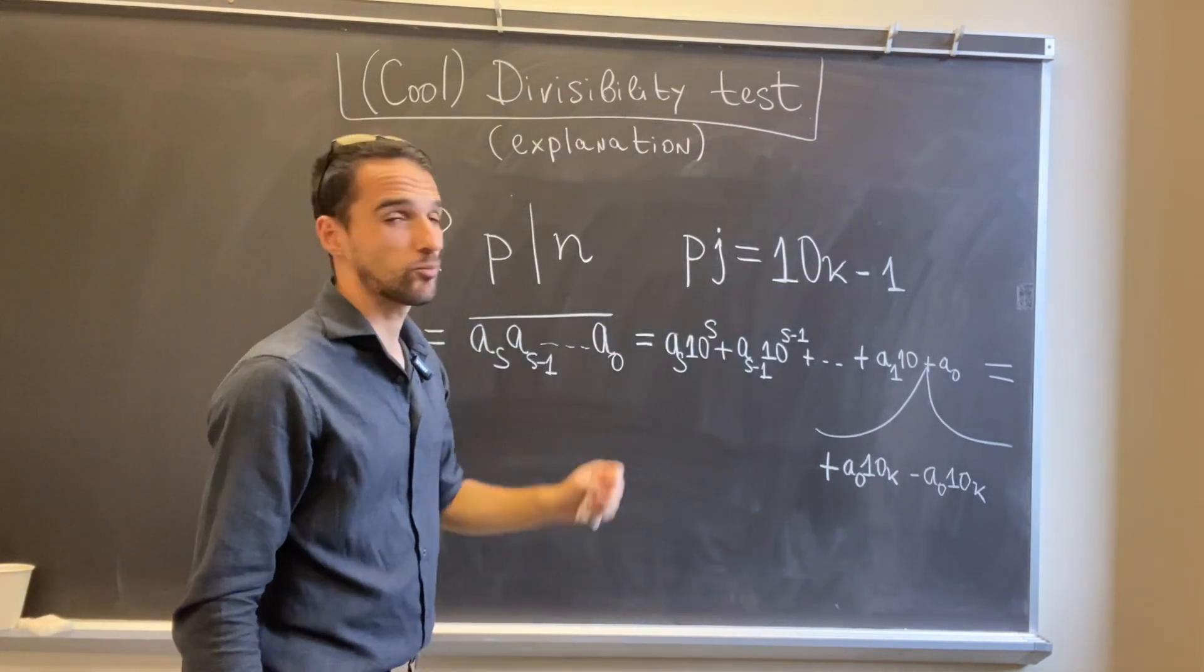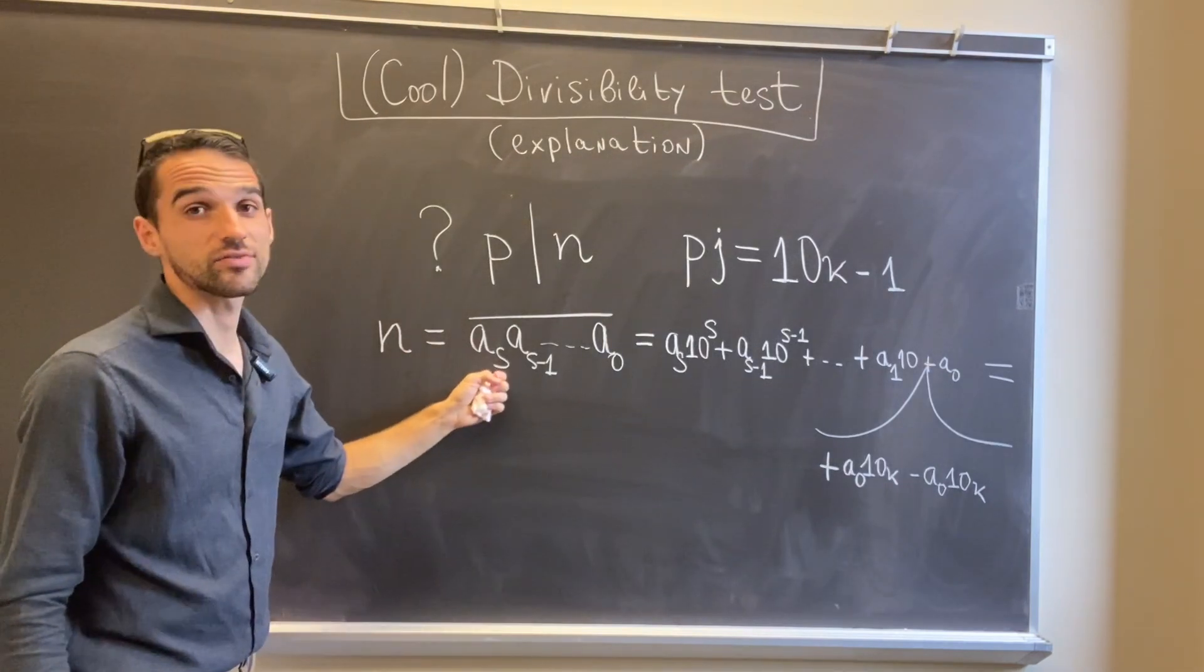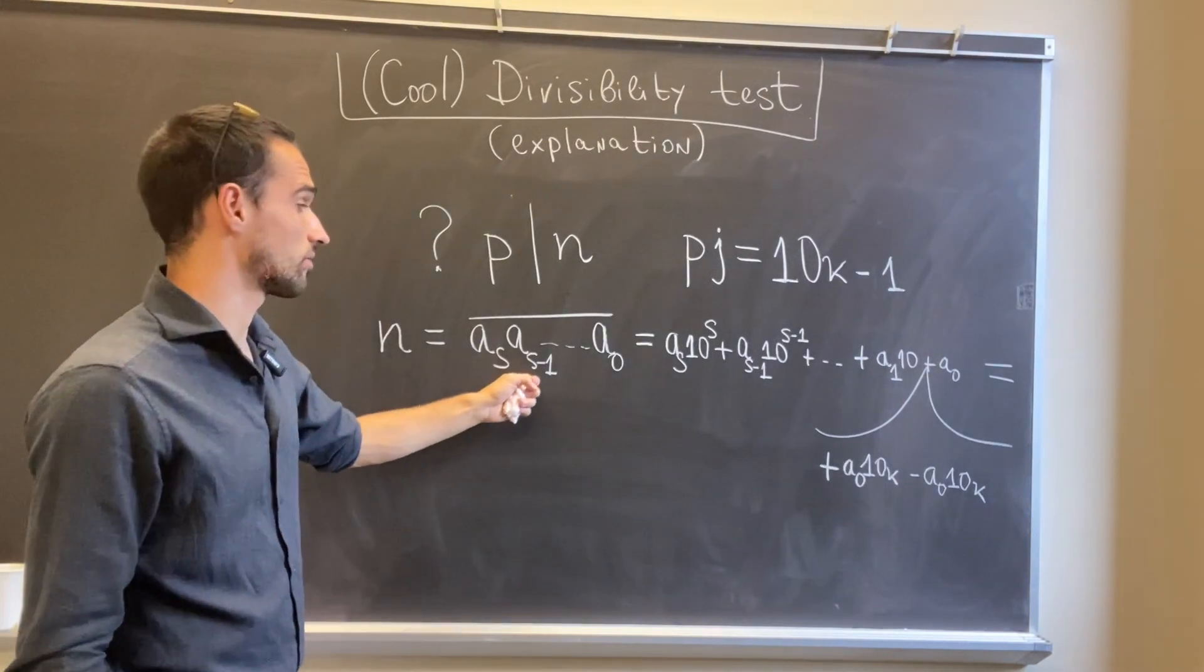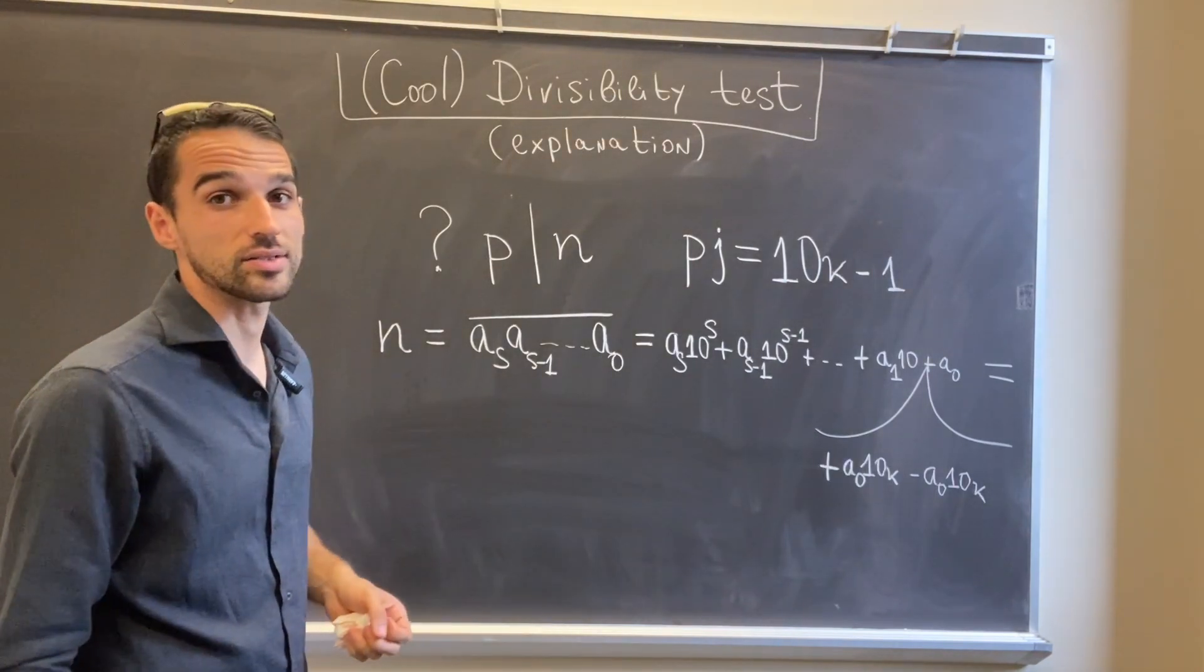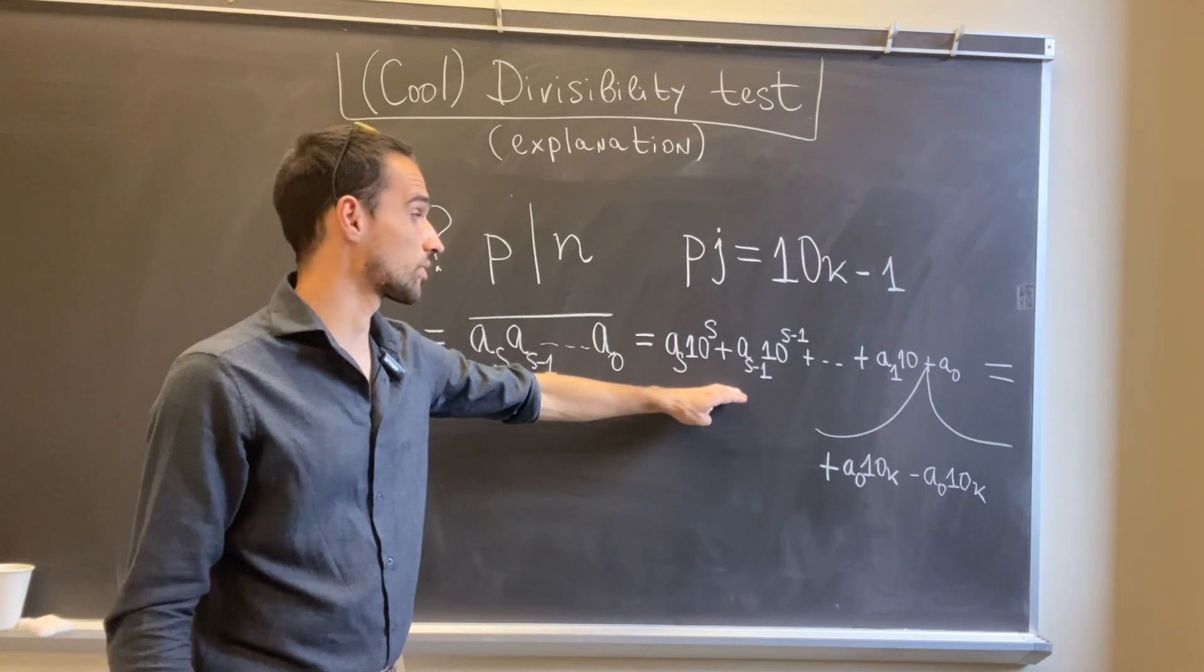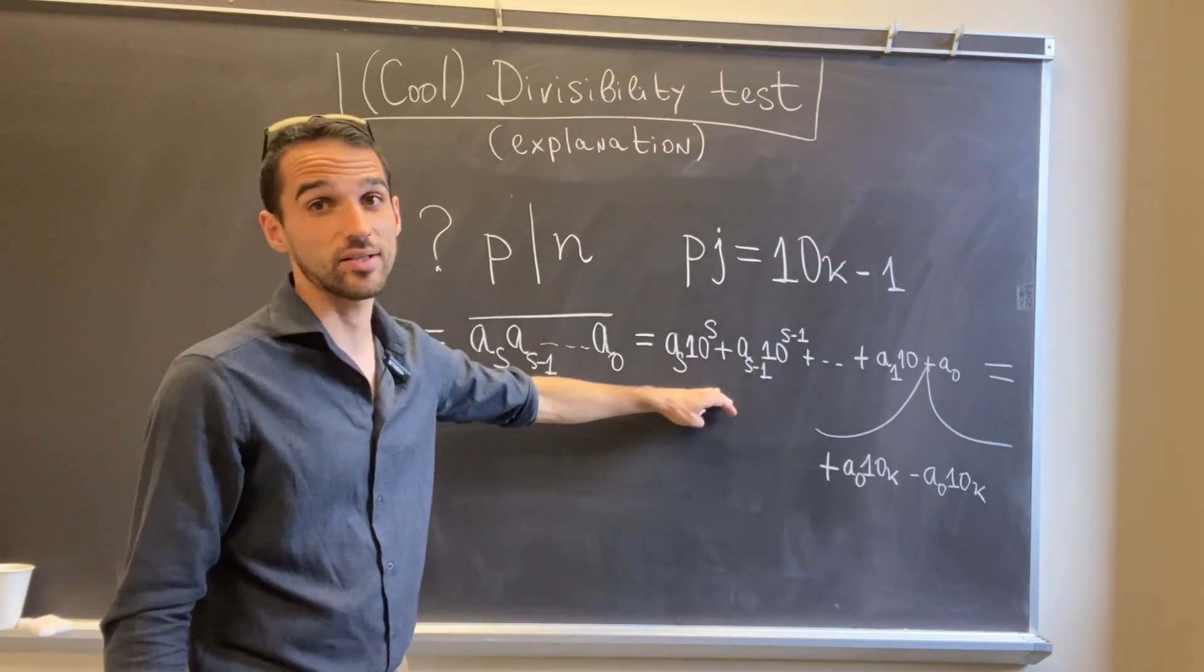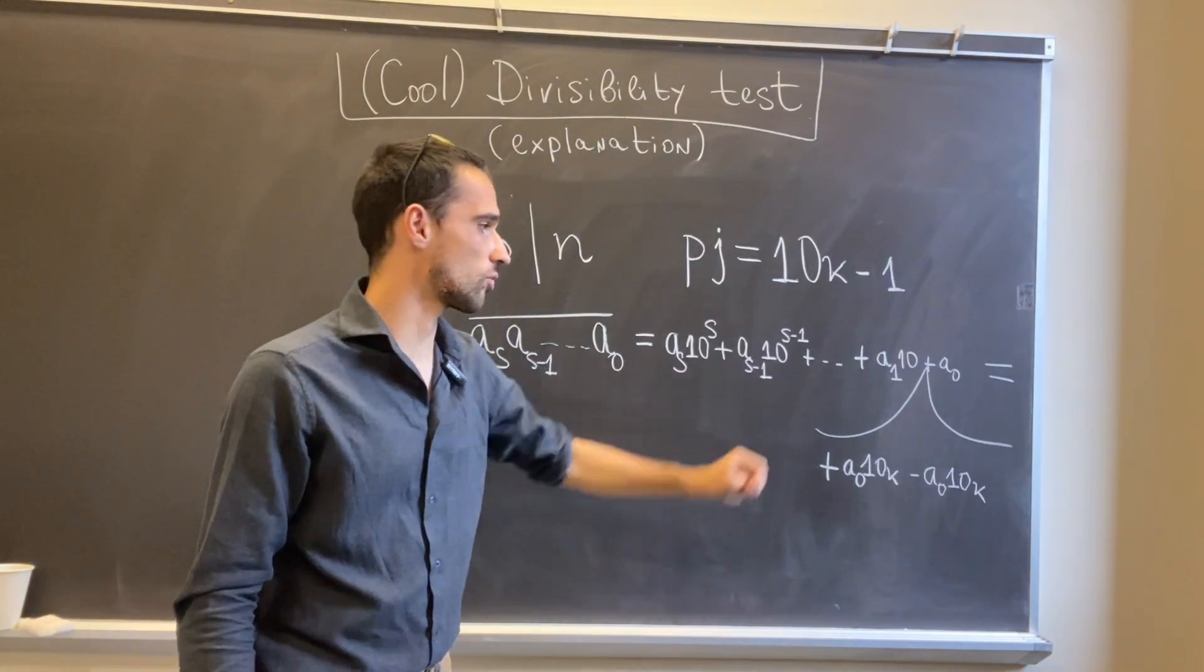If we have plus 1 the situation is very similar. Let's say the digits of my number n are given here as a_s, a_{s-1} and so forth up to a_0. This means that basically n is given by this summation: a_s times 10 to power s, plus a_{s-1} times 10 to s minus 1, and so forth.